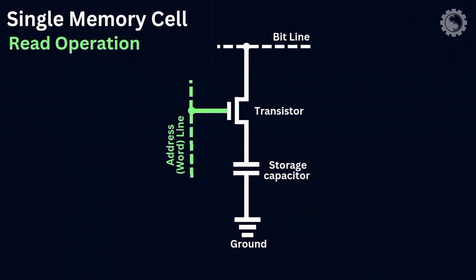During the read operation, the address line is selected, the transistor turns on, and the charge stored on the capacitor flows out onto the bit line to a sense amplifier. Sense amplifiers compare the capacitor voltage to a reference value to determine logic one or logic zero.